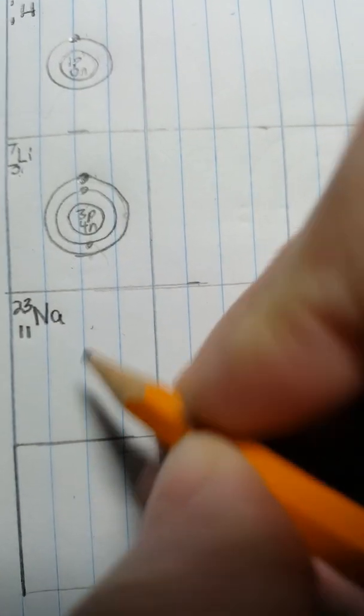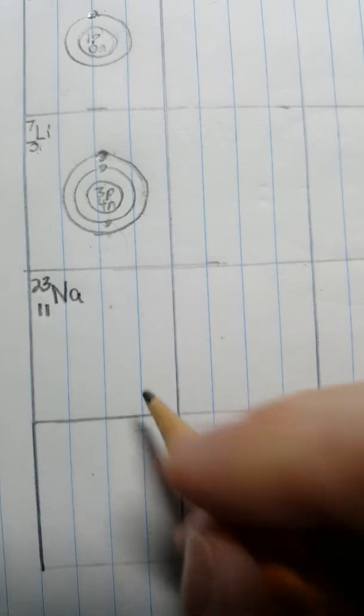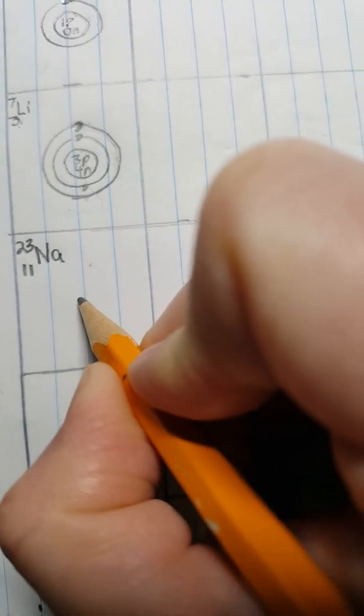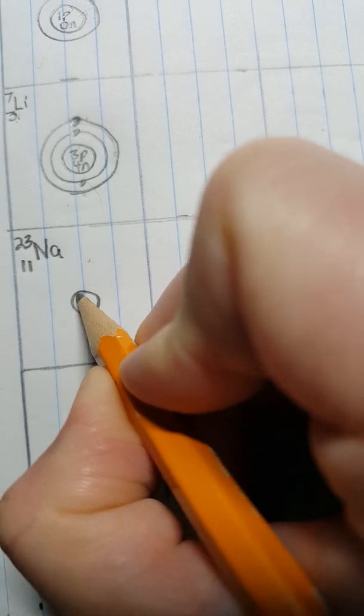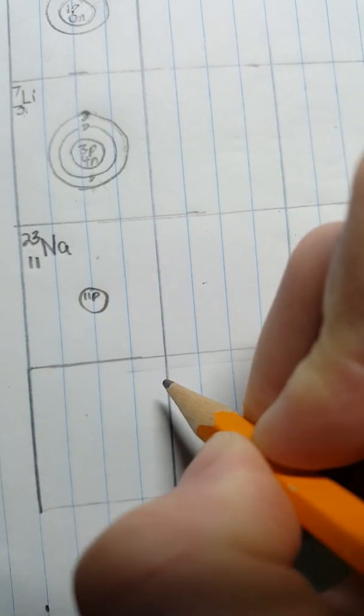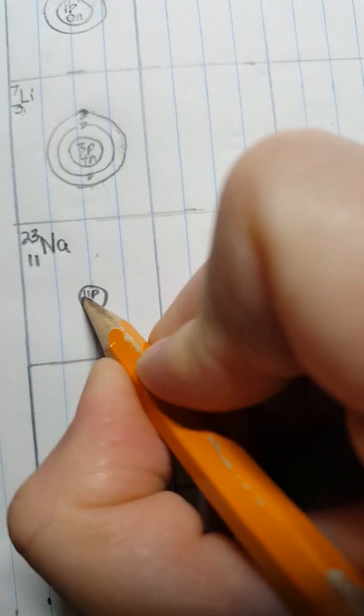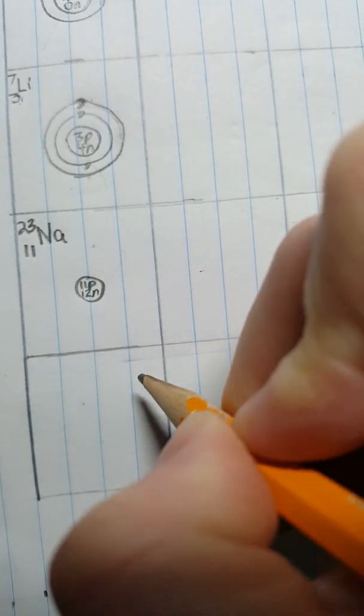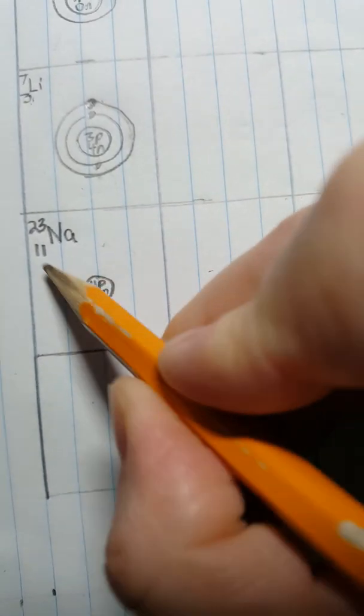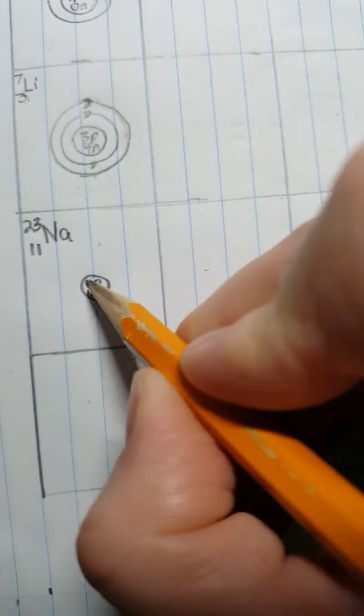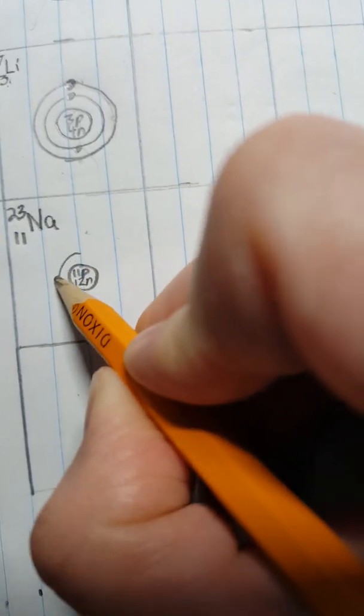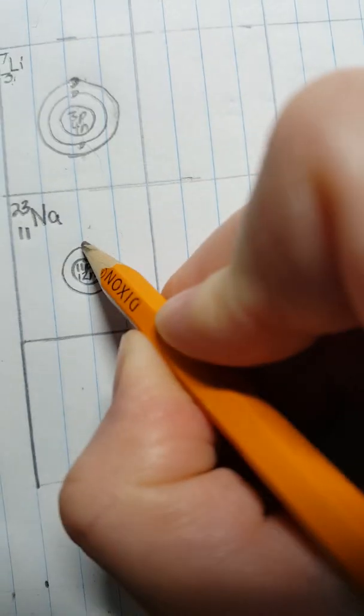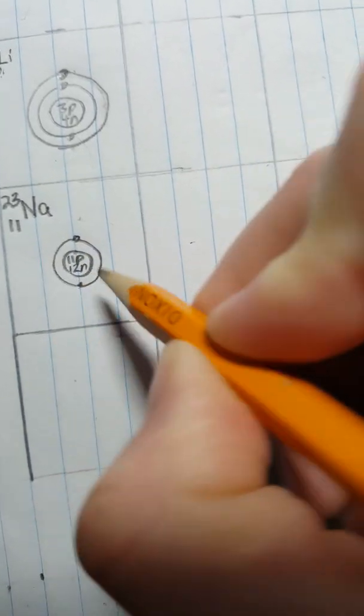And I'll write my information here for Sodium. That tells me everything I need to know to draw a Bohr-Rutherford diagram of Sodium. There's my nucleus. Sodium has 11 protons and 12 neutrons. I need to find a home for the 11 electrons. Remember, if there's 11 positive protons, there must be 11 negative electrons. I'll draw my first energy level. It will hold a maximum of two electrons. Now it's full,